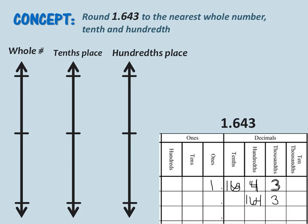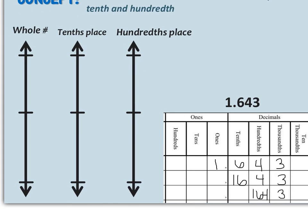Now we will fill in our vertical number lines based on what we are rounding our number to. In our first number line, we will be rounding to the nearest whole number. We create our maximum and minimum values based on our first number in the table. We have one as our whole number, so our maximum value will be one more than the one — which makes it two. Our minimum value stays at one. The halfway point between one whole and two wholes would be one and five tenths, because five tenths is half of what's needed to create another group.